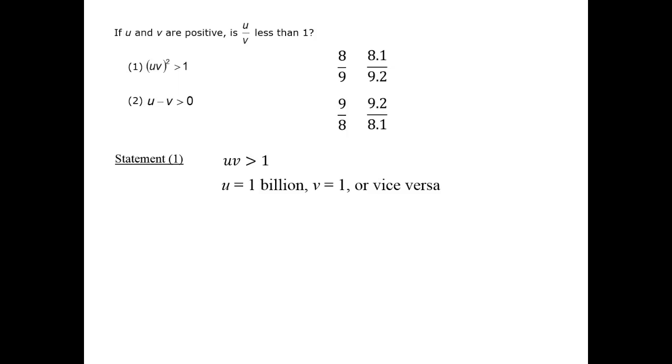u could be 1 billion and v could be 1 or vice versa. So, we don't have sufficient information to identify which is greater and, therefore, to answer the question. Statement 1 is insufficient.